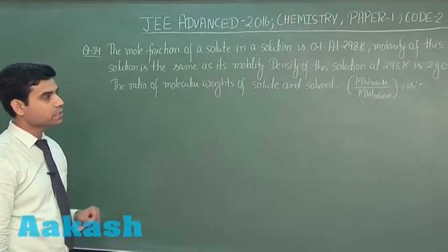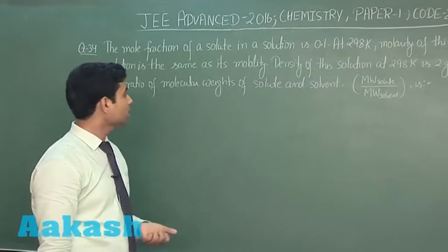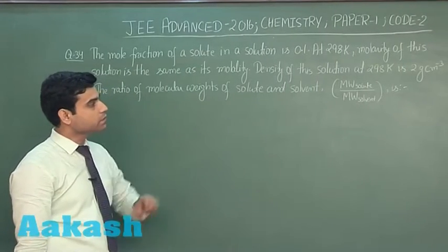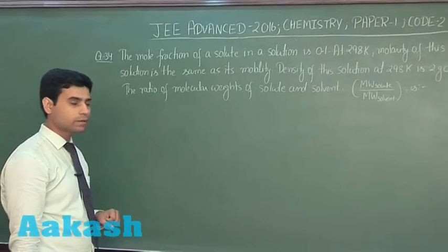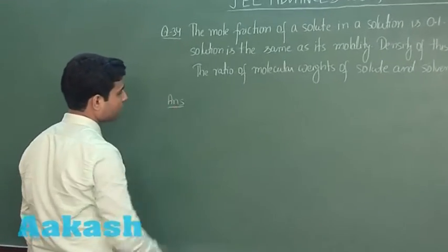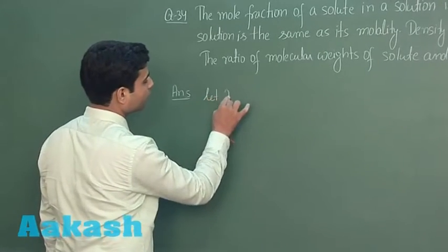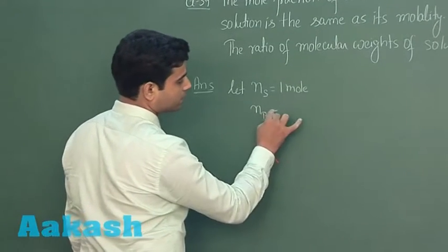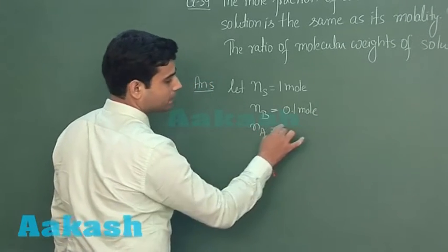Question 34: the mole fraction of a solute in a solution is 0.1 at 298 K, and the molarity of this solution is the same as its molality. Density of the solution at 298 K is 2 g/cm³. We need to find the ratio of molecular weights of solute to solvent. Let the total moles of solution be 1, so moles of solute B = 0.1 and moles of solvent A = 0.9.